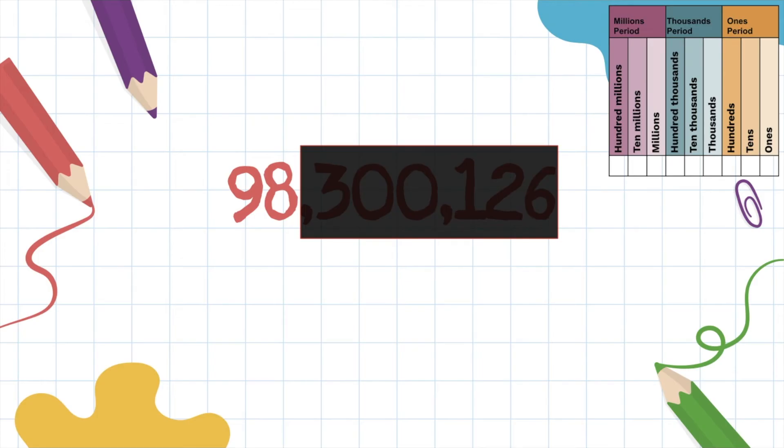Now that we covered up everything except for the millions period, let's go ahead and read this number name. We'll do first name first and then last name. First name, 98. Last name, million. Don't forget the comma.